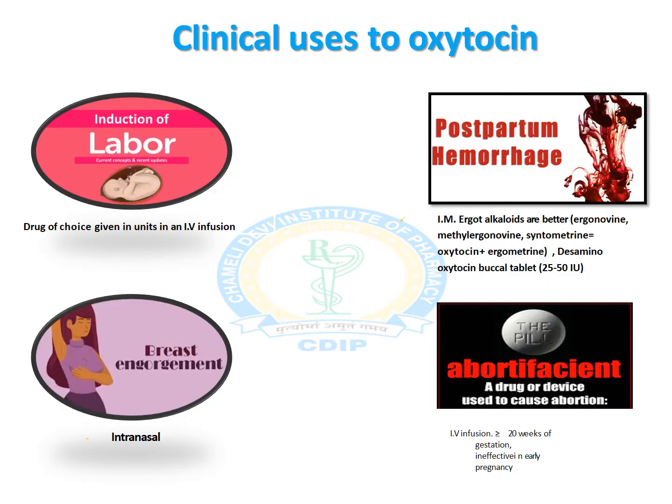The clinical uses of oxytocin include induction of labor, for which it is the drug of choice; intravenous infusions are usually given in units. It is also used in postpartum hemorrhage, although ergot alkaloids are the best choice over oxytocin. Nowadays, desamino-oxytocin buccal tablet is also available to treat postpartum hemorrhage conditions, in the dose of 25 to 50 international units.